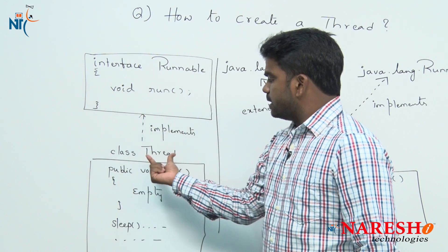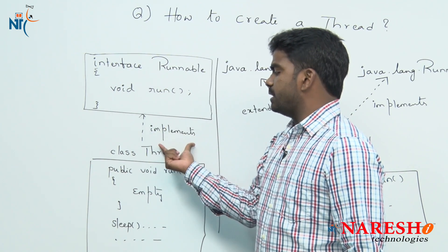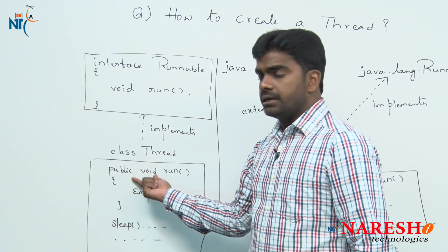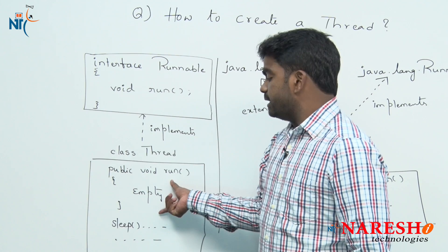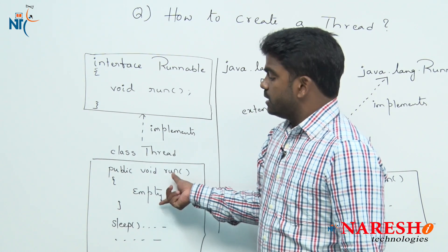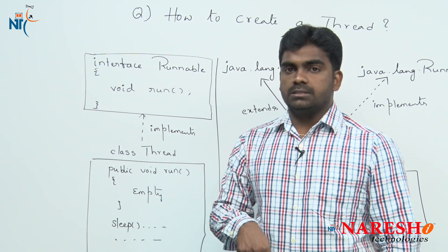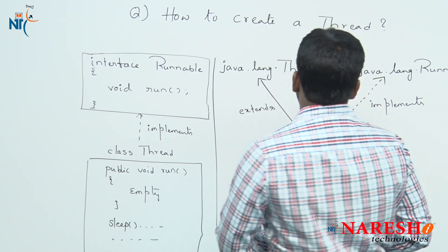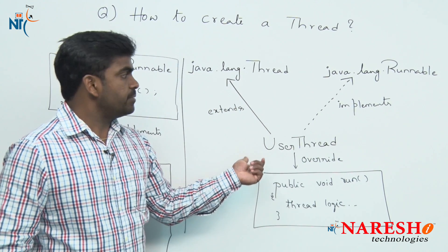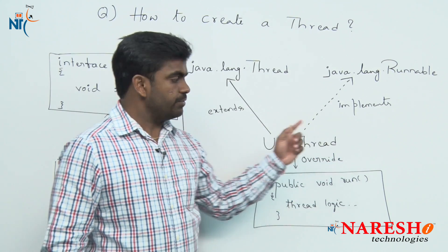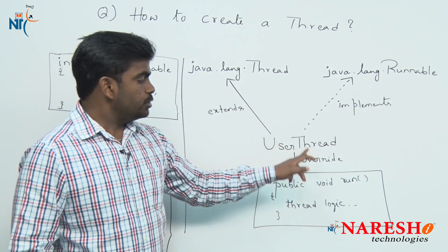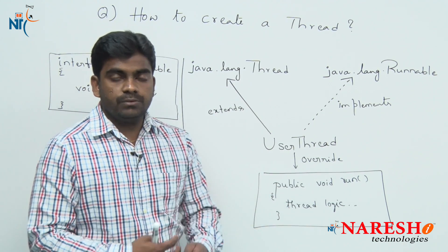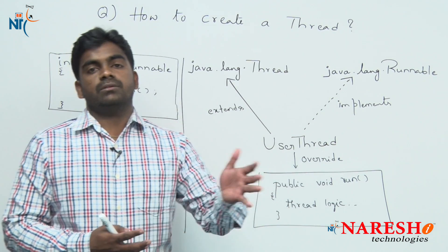The Thread class is already implementing the Runnable interface. So public void run method is already defined in the Thread class, but with an empty definition — nothing is inside. That is why whenever you are extending from the Thread class or implementing the Runnable interface, you have to override the run method with your user-defined logic. That logic will execute in a separate thread space.